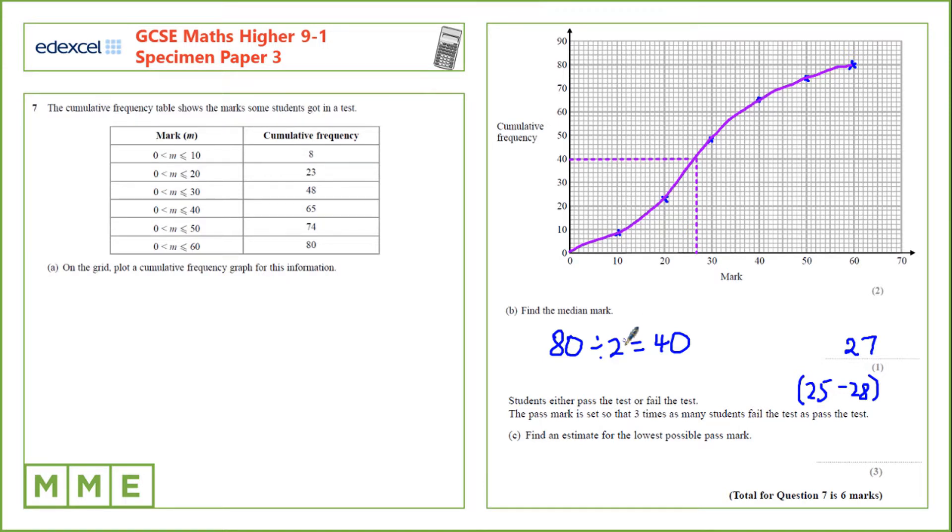Students either pass the test or fail the test. The pass mark is set so that three times as many students fail the test as pass the test. Find an estimate for the lowest possible pass mark. If three times as many students fail as pass that means 75% fail and 25% pass.